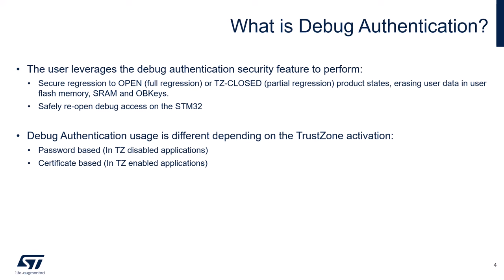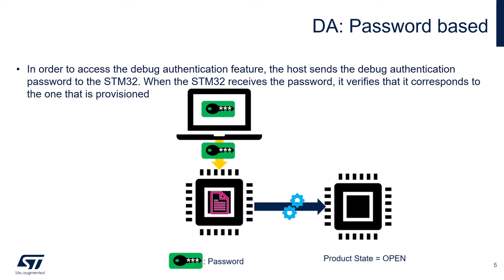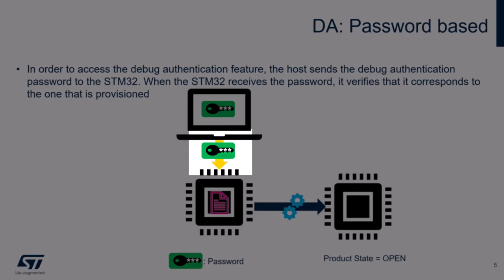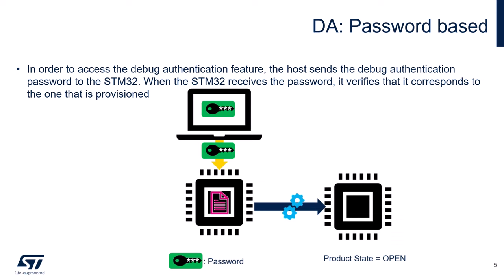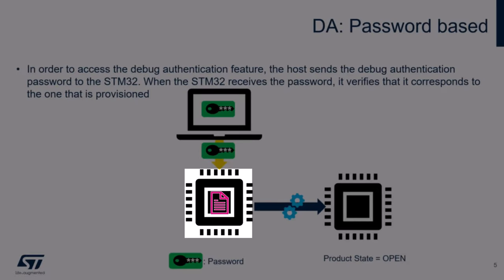Debug authentication usage depends on the nature of trust zone applications. In trust zone disabled applications, the regression is achieved through a password-based mechanism, while in trust zone enabled applications, the same is achieved through a certificate chain mechanism. In the password-based mechanism, the host sends the debug authentication password to the STM32 device, and the device compares the hash of the received password against the one that was previously provisioned in the device key storage.